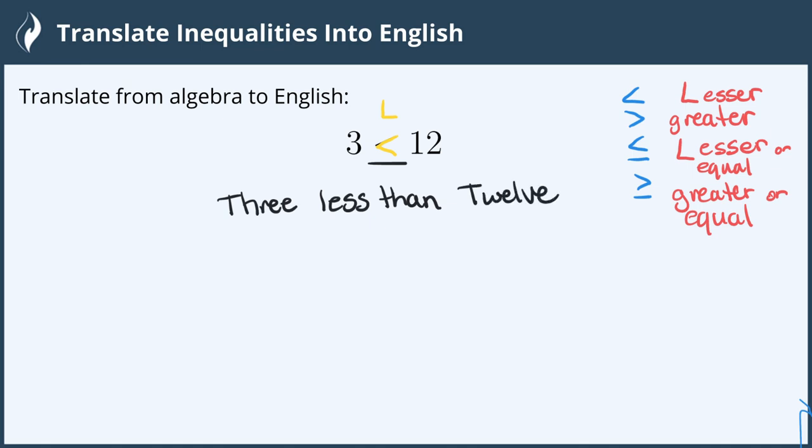So translated, this algebraic phrase is, in English, 3 less than 12, and we're all done.